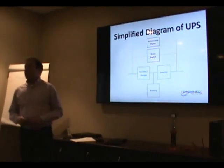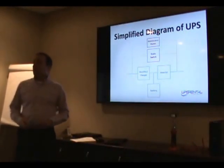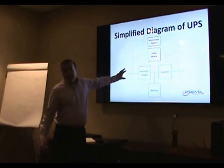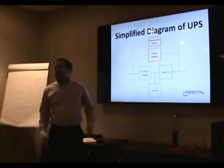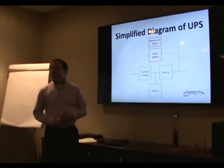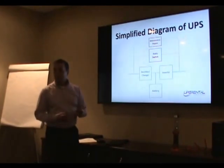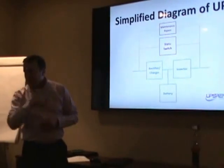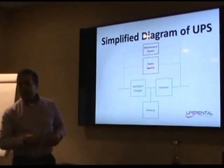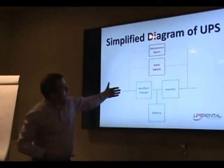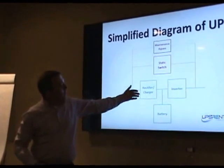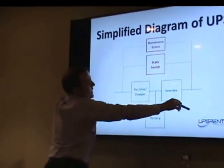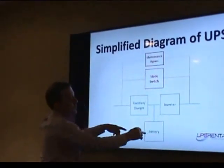So this is a basic block diagram of a UPS — very, very simple. This is where the utility power would come in. The local utility here is Pico Energy, so they supply the power coming into that plug right there to us, and we pay dearly for it every month. That power comes in here to the UPS. This whole thing is the UPS — everything from red down is inside the UPS box itself.